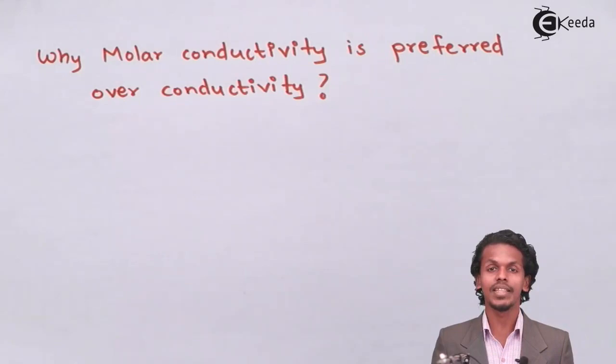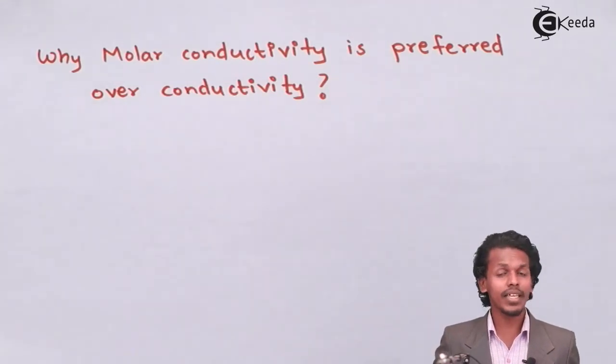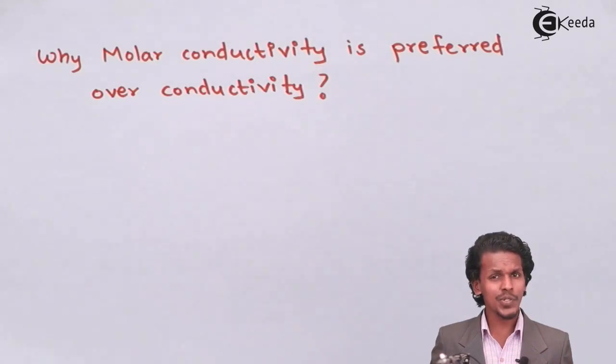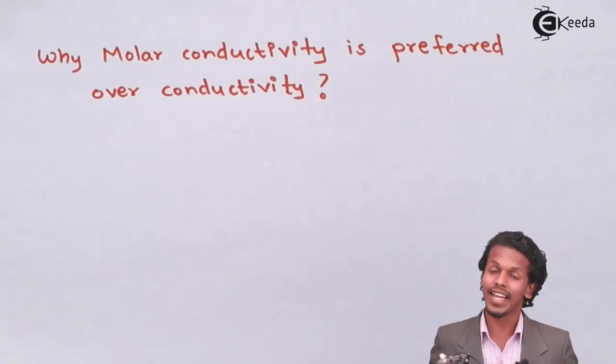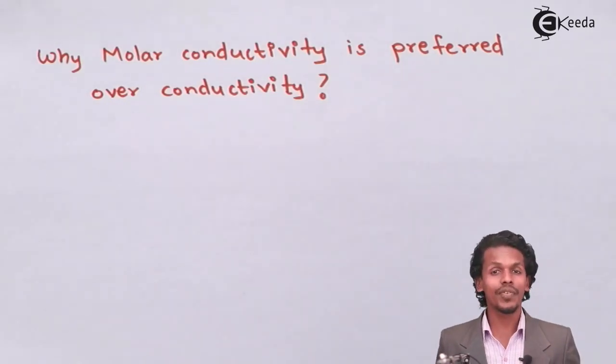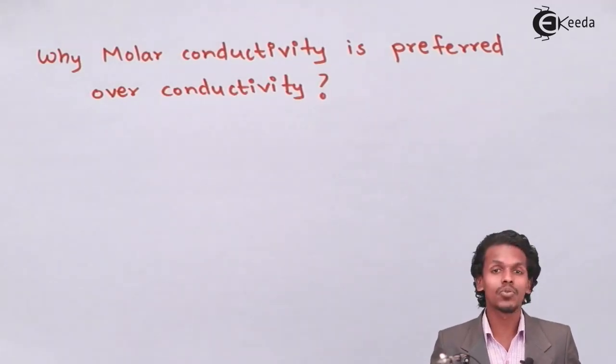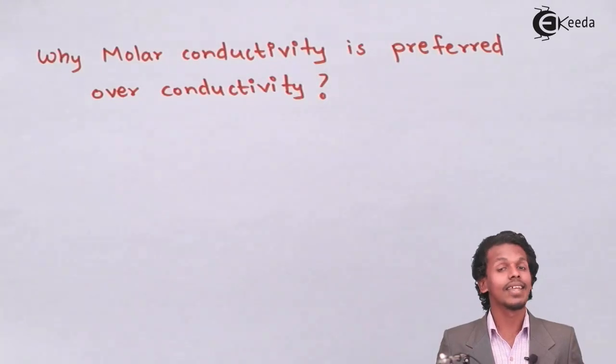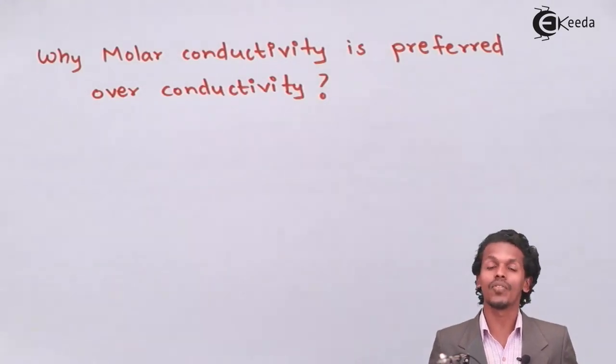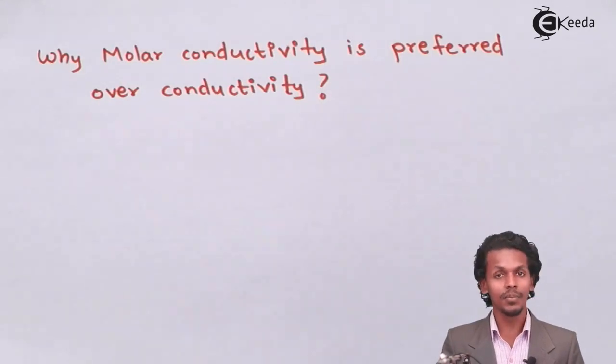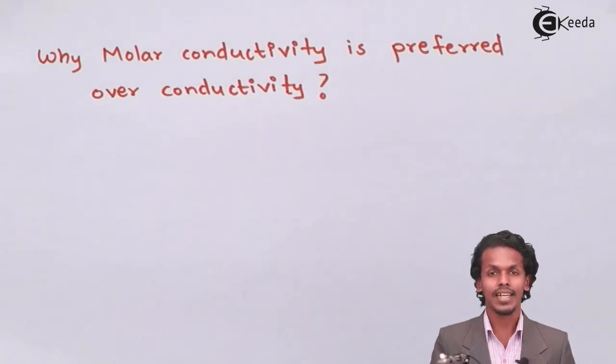Molar conductivity refers to the conductivity of one mole of an electrolytic solution, so it has a specific value. But conductivity is not constant because it depends on the number of cations or anions present. Since molar conductivity is specific in its terms, it is much more preferred than conductivity.